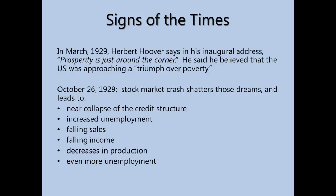In his inaugural address, Hoover said he believed the United States was approaching a triumph over poverty, and so the times were looking pretty bright. But by the end of that year, in October 1929, the most famous stock market crash shattered a lot of the economic stability of the era. The credit structure was nearing collapse. Unemployment had increased a great deal, and because of that sales had fallen off, income fell, production began to decrease, and it began this spiral of increased unemployment and further falling sales and more decreases in production as the private market system responded to those economic pressures without any intervention by the government at all.